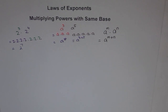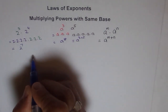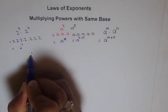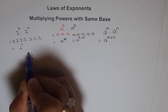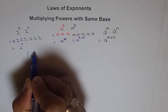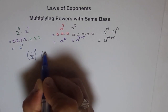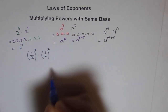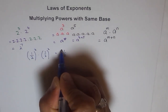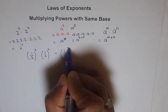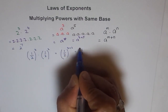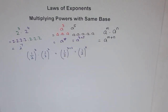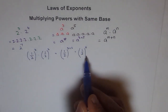We can take more examples to see whether this works even with numbers like fractions. If we have one-half to the power of three times one-half to the power of two, we should get one-half to the power of three plus two, which is one-half to the power of five. The powers get added and the base remains the same.